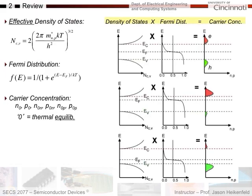A bit of review from last time: carrier concentrations are calculated as the density of states — how many states are available — times the Fermi distribution — what's the probability of filling them — giving us electron and hole populations. For n-type material doped with phosphorus, we increase the number of electrons, which decreases the number of holes because they find more electrons to recombine with. This causes the Fermi level to shift up toward the conduction band.